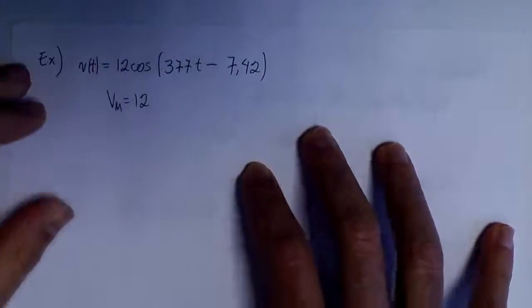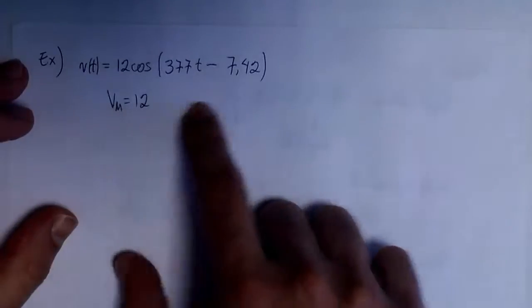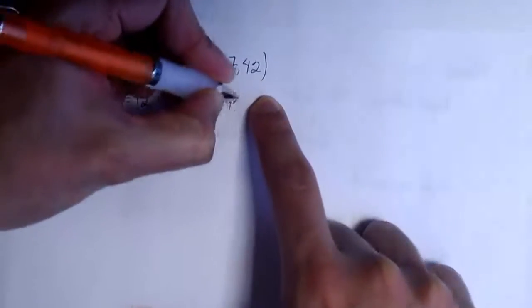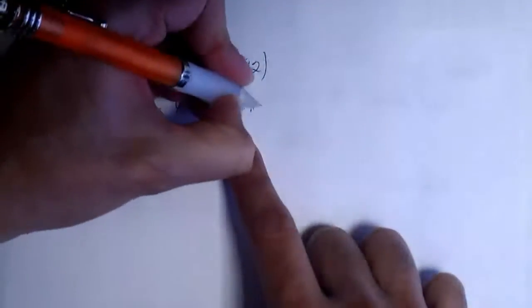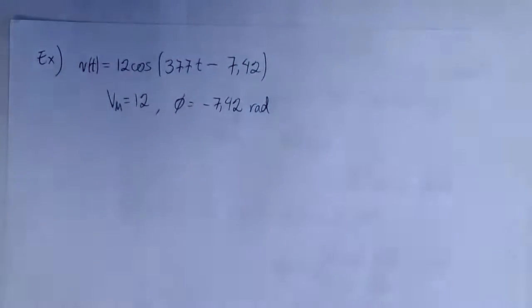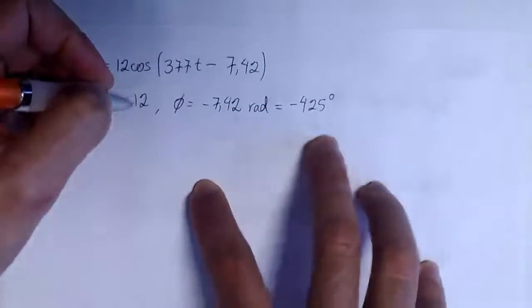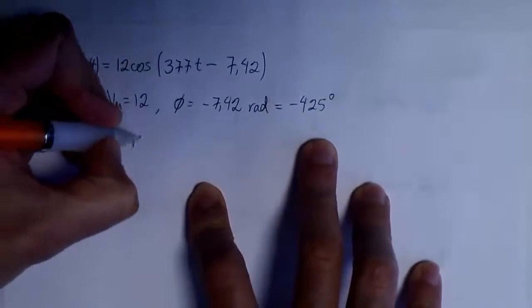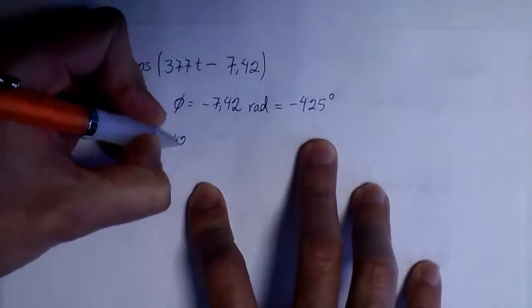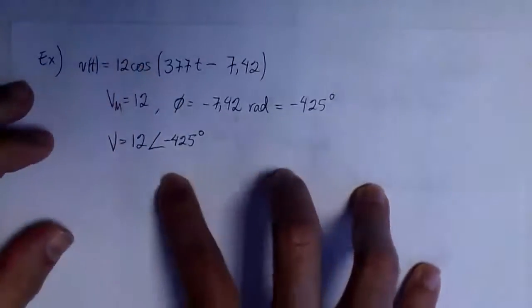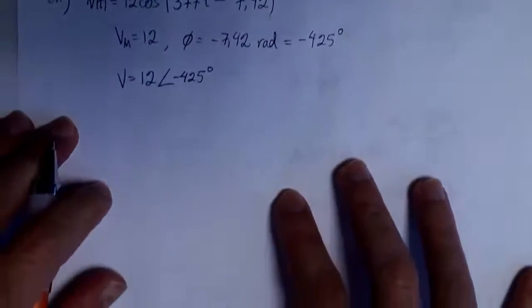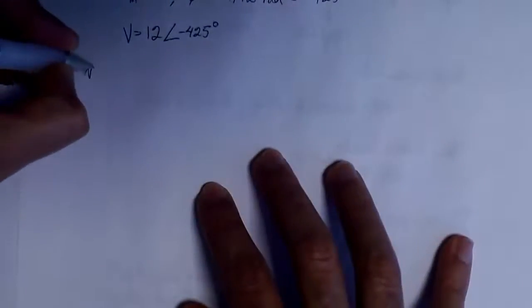In this example, I'm going to find the phasor representation of a given function. We get the amplitude — in this case it's 12 — and we get the phase from the argument of the cosine in radians. If we convert it to degrees, in this case we get minus 425 degrees. So the phasor of this function is just 12 with a phase of minus 425 degrees. That's the phasor of a cosine function.